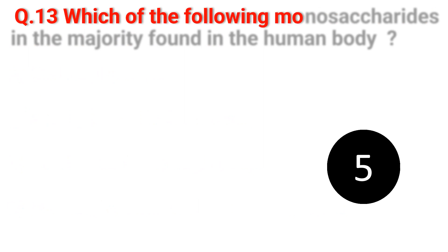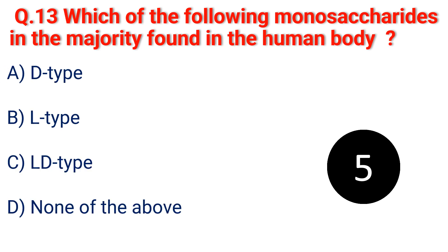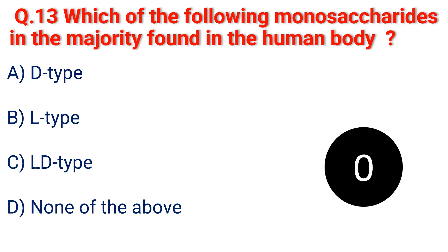Question 13. Which of the following monosaccharides is the majority found in the human body? A. D-type. B. L-type. C. Aldehyde and ketone groups. D. None of the above. The answer is B. L-type.